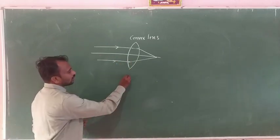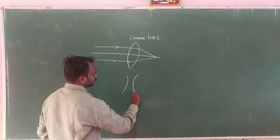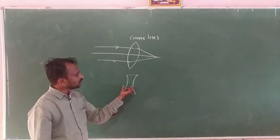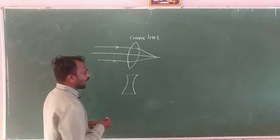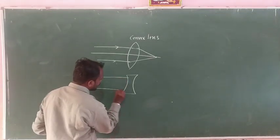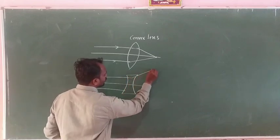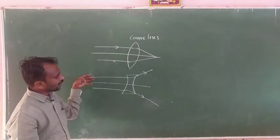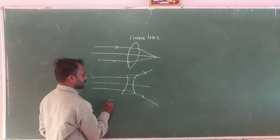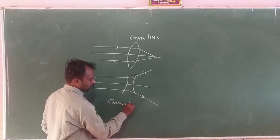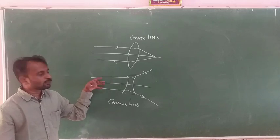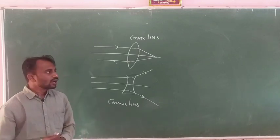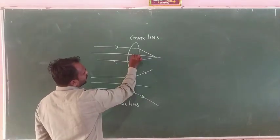The concave lens has a thin middle part and thicker edges. This lens always produces a diverging beam of light when a parallel beam of light passes through it.